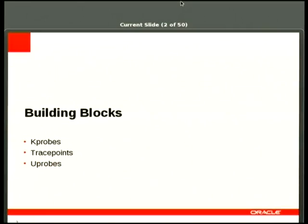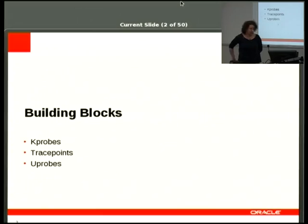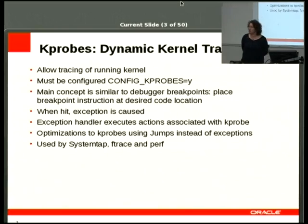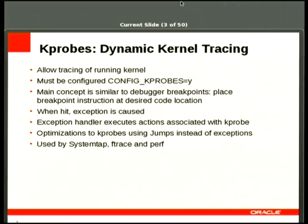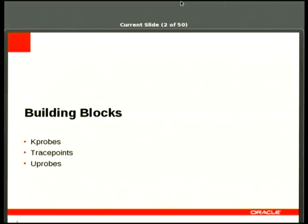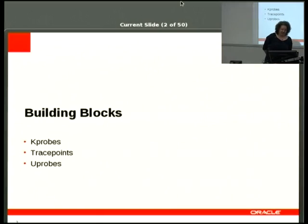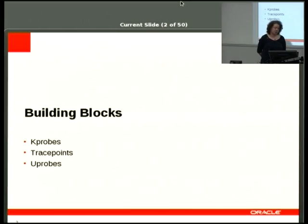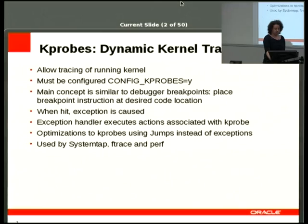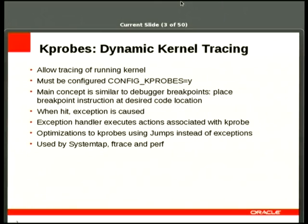At the beginning I want to talk about the infrastructure and building blocks available on Linux today to perform tracing, which are used by all these tools. Basically we have three different types of building blocks or infrastructure in the kernel: kprobes, trace points, and uprobes. Let's go through those in that order.